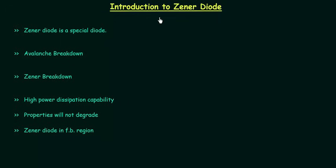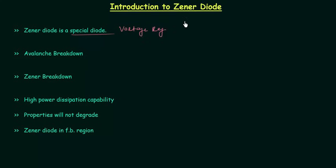In this lecture, I will introduce the Zener diode. Zener diode is a special diode and it is widely used in voltage regulation to maintain a constant voltage across a varying load. If we want a constant voltage across a varying load, we use Zener diode for this purpose.